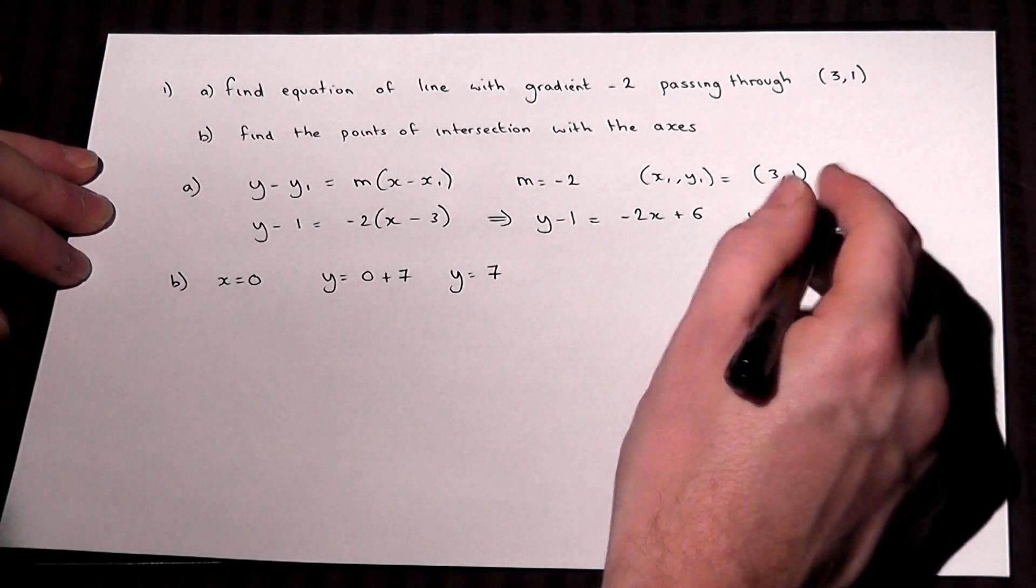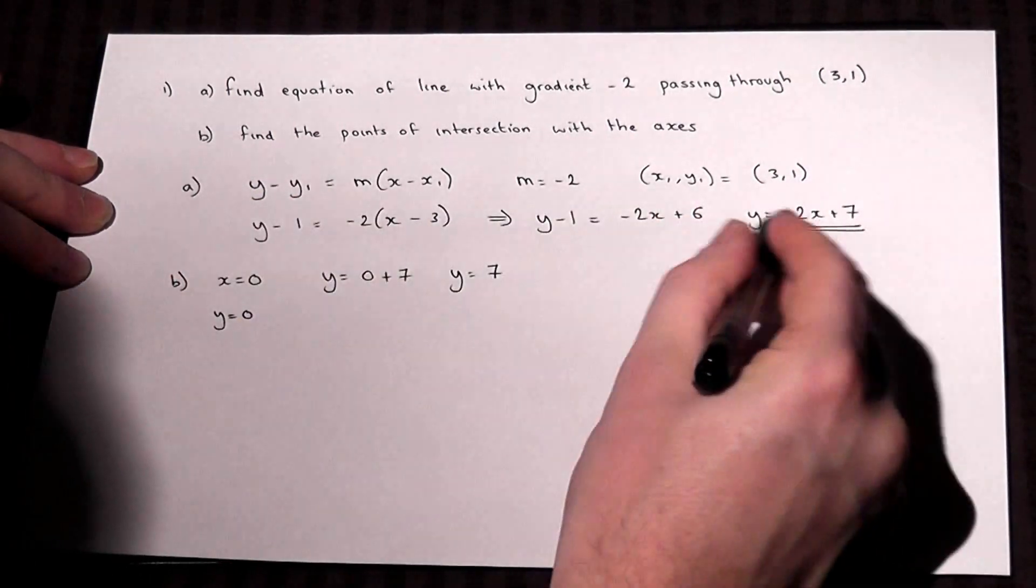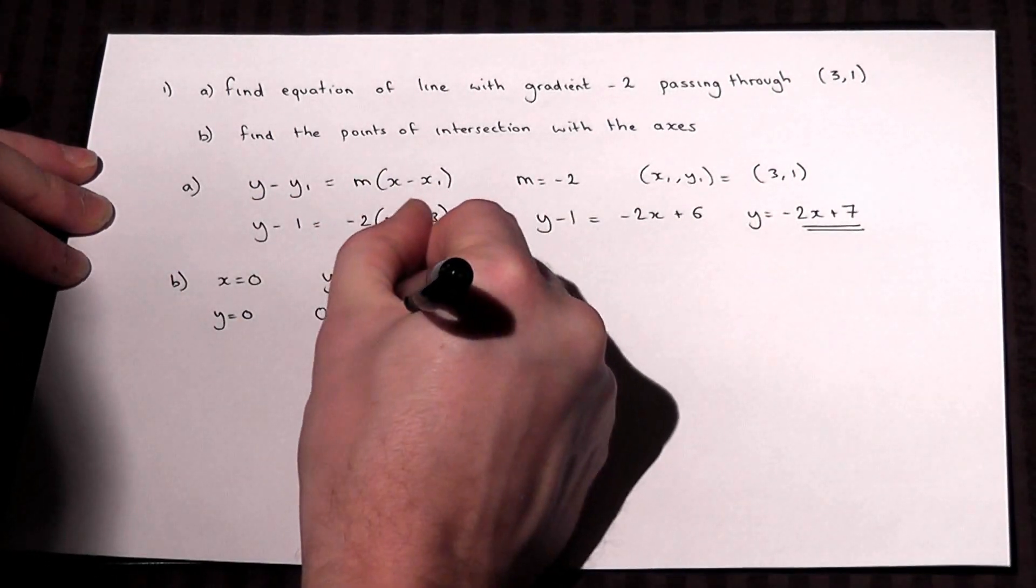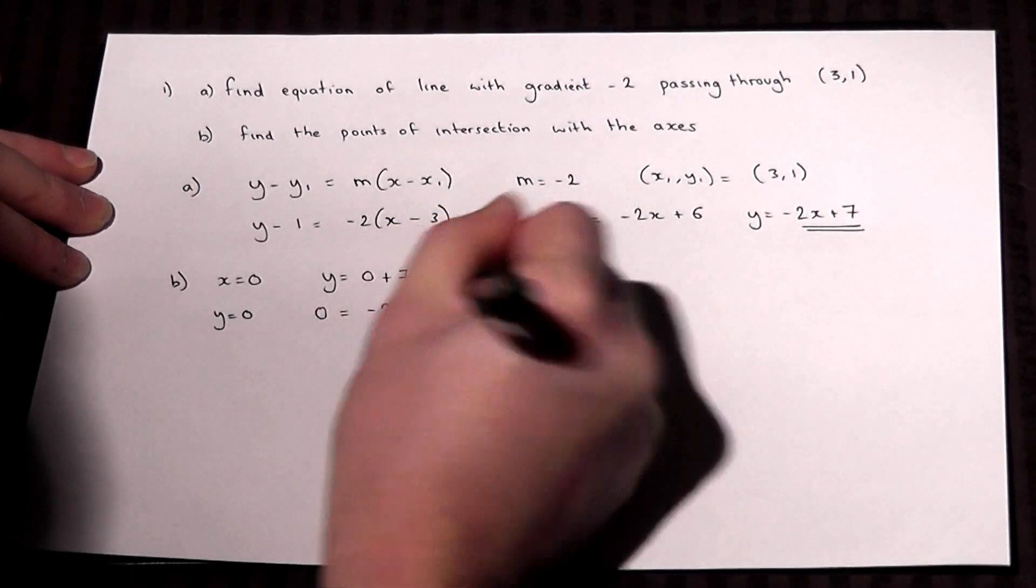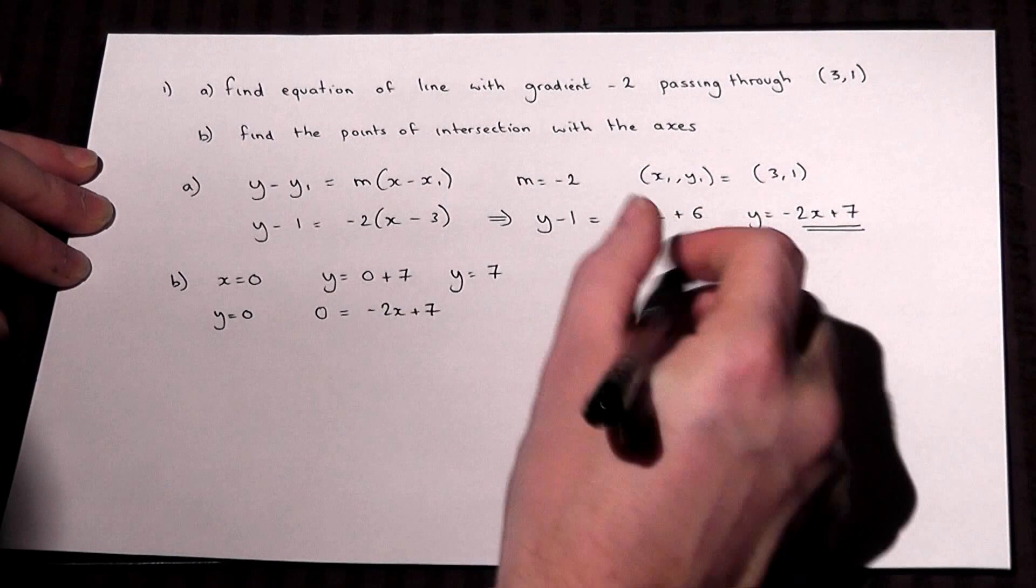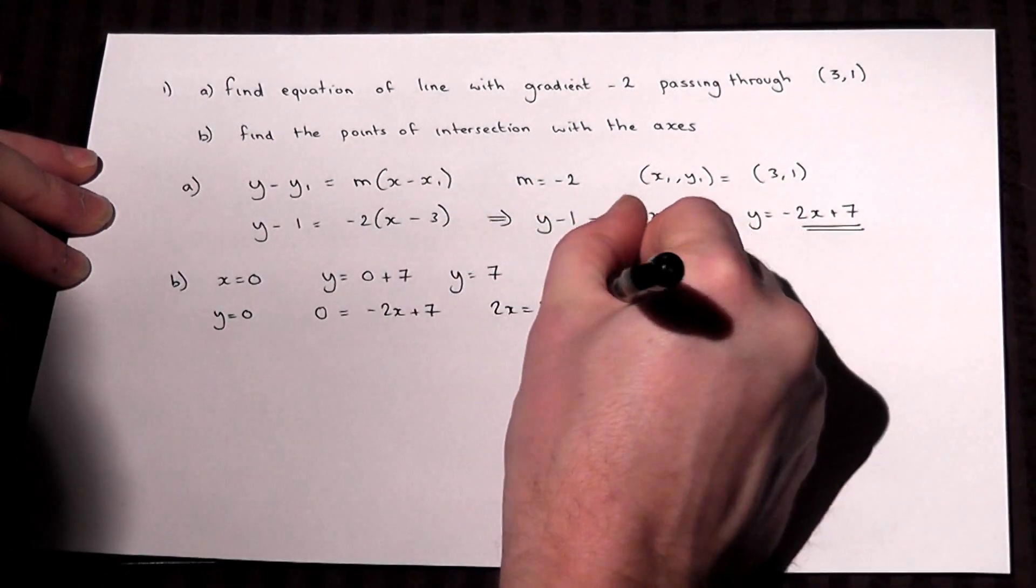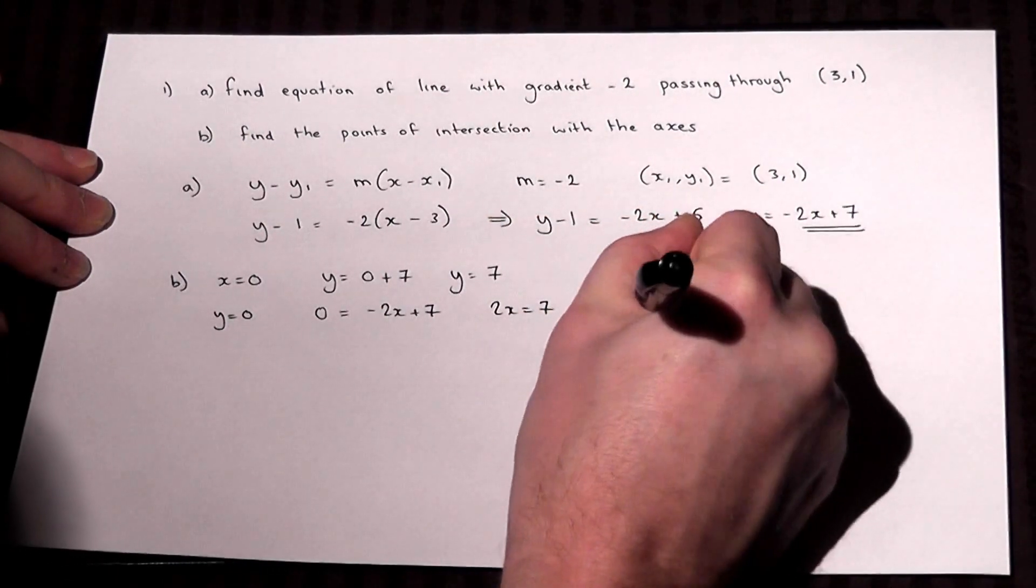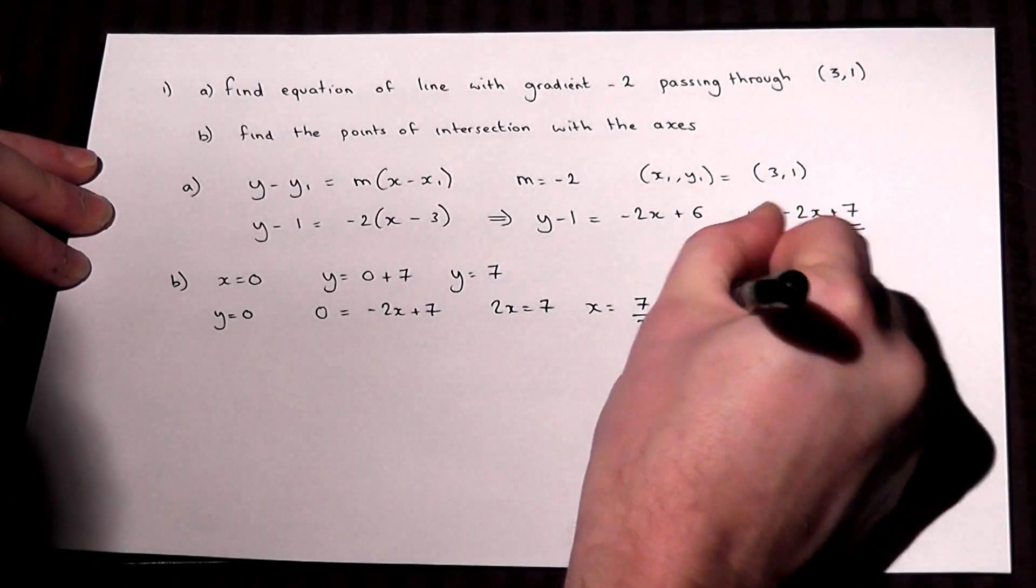The x-axis is where y equals 0. So 0 will equal minus 2x plus 7. If I rearrange this, if I add the 2x to the left, 2x will equal 7. So x will equal 7 divided by 2, which is 3.5.